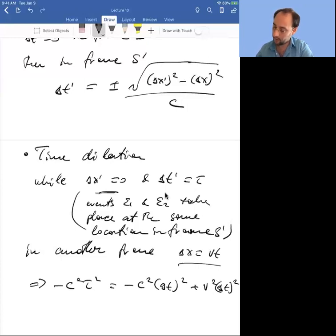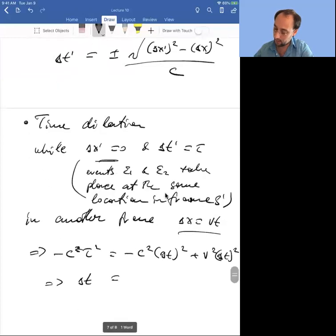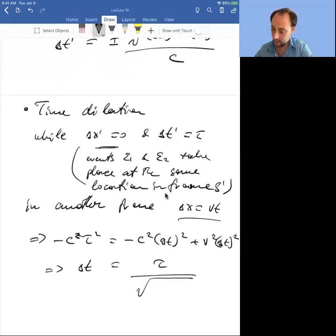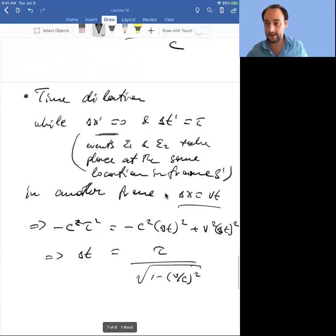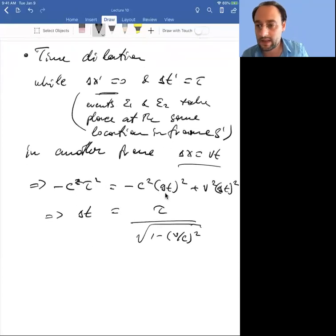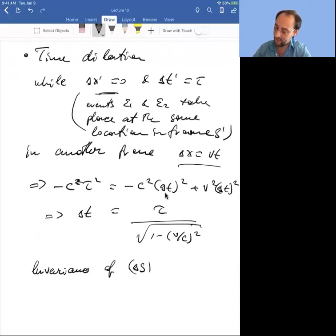Therefore, minus c squared tau squared equals minus c squared delta t squared plus v squared delta t squared. You can solve for delta t, you get tau divided by the square root of 1 minus v over c squared. You can start seeing why I get excited about the invariance of the spacetime interval, because it basically contains all of relativity.